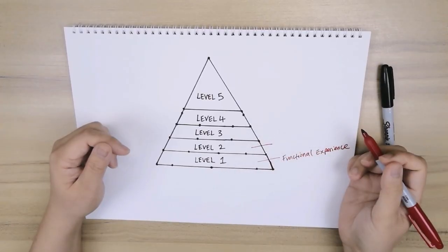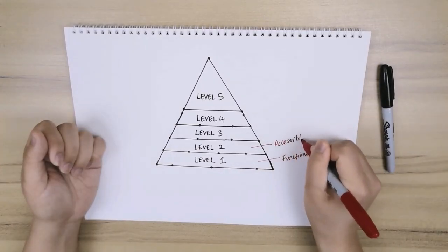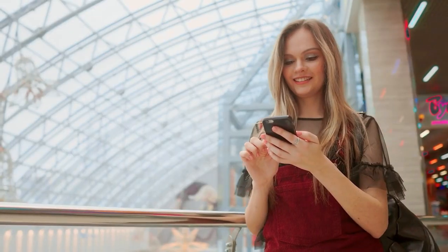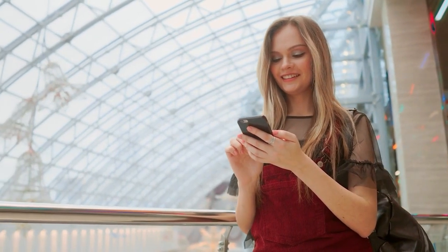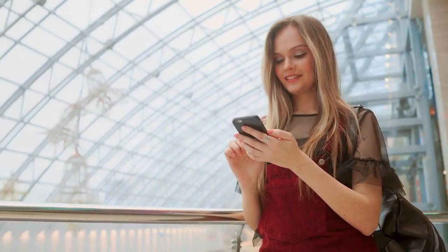Next, we move up to level two of the pyramid, which is the accessible experience. As you know, customers value ease of access and convenience. This level focuses on making the product or service readily available to be able to use at any point of time.